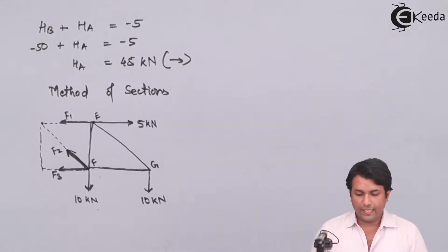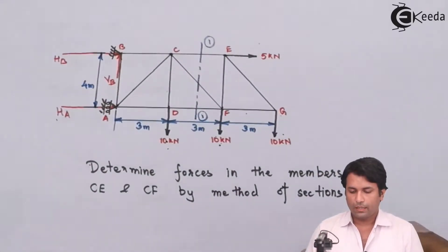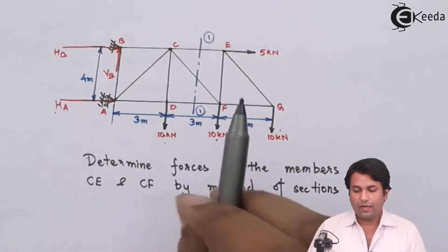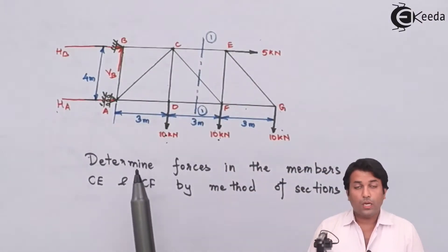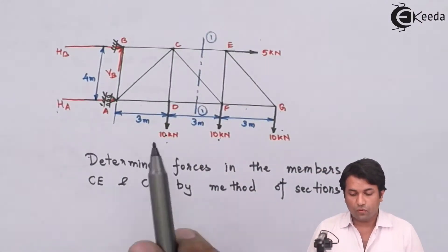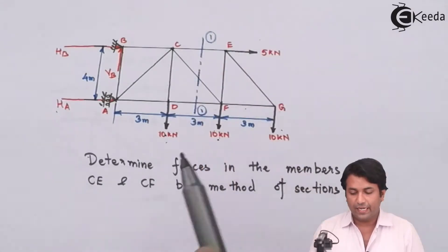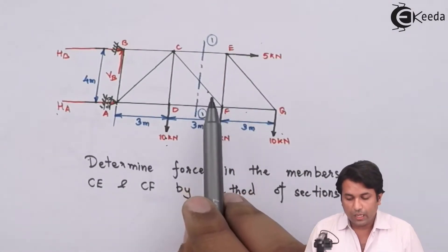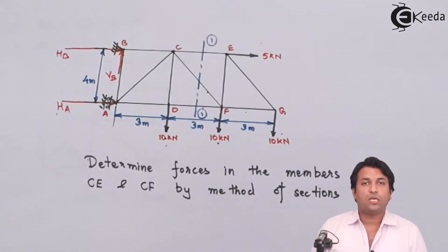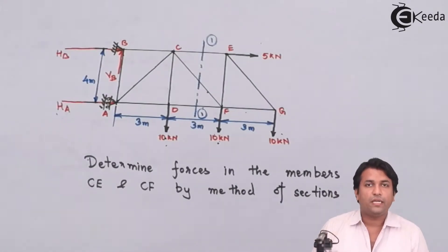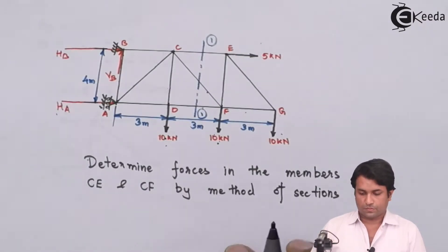I have drawn the right-side part of the truss. For member CE I am calling it F1, for CF I am calling it F2. I have one more unknown force where I am cutting member DF, which I call F3, because when solving this side, that force will also have an effect and must be considered to get the correct answer.